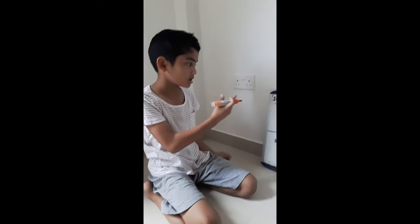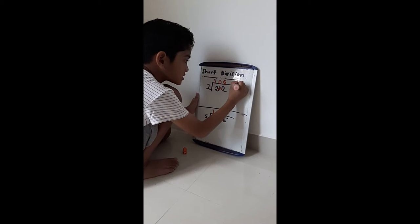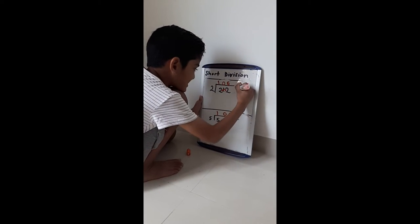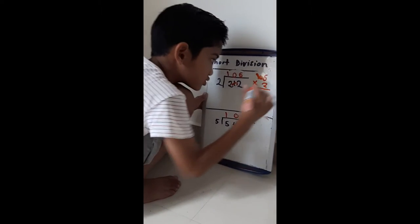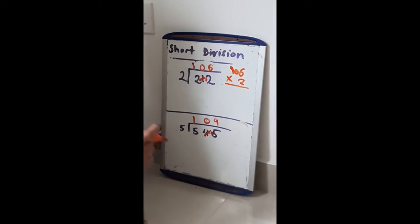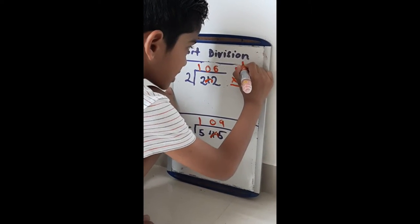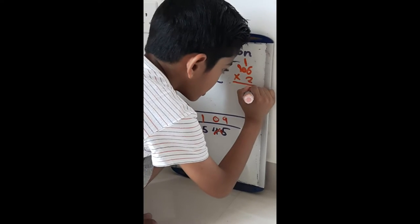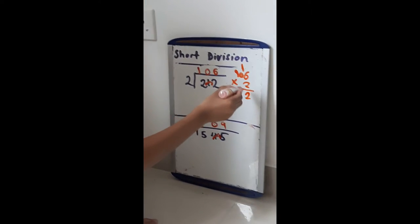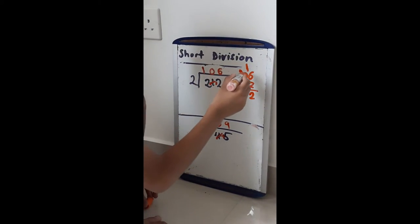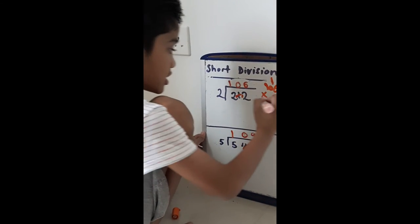Now I'm going to show you how to check your answers. You do 106 times 2. 6 times 2 is 12, so the tens go here and the units go here. 2 times 0 is 0, then add 1, so it's 1. Then 2 times 1 is 2.